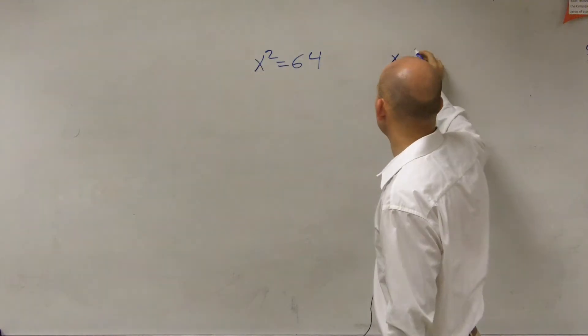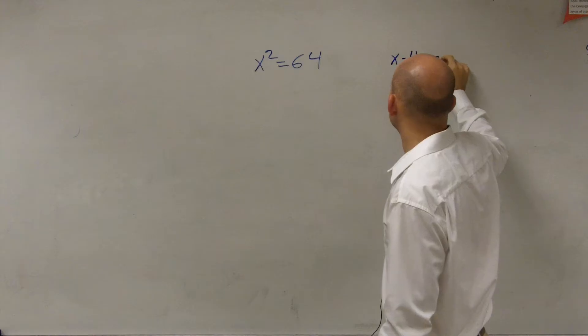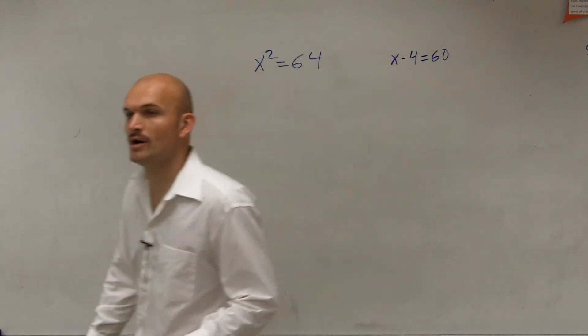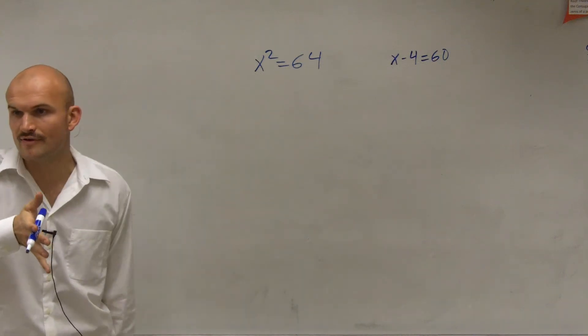So if you guys remember, if I had something like this, x minus 4 equals 60. To solve this, back in lovely algebra 1, we had to isolate the variable, correct? So we had to undo what was happening to the variable.